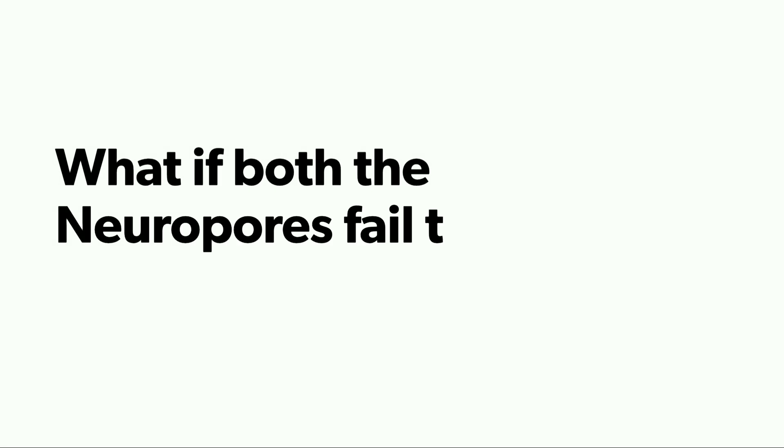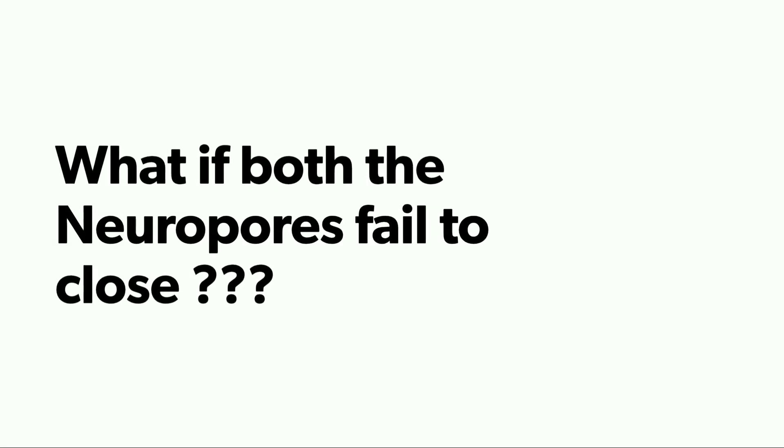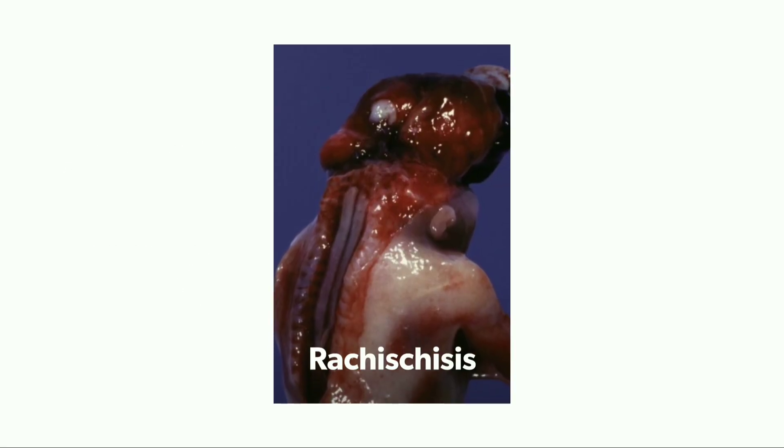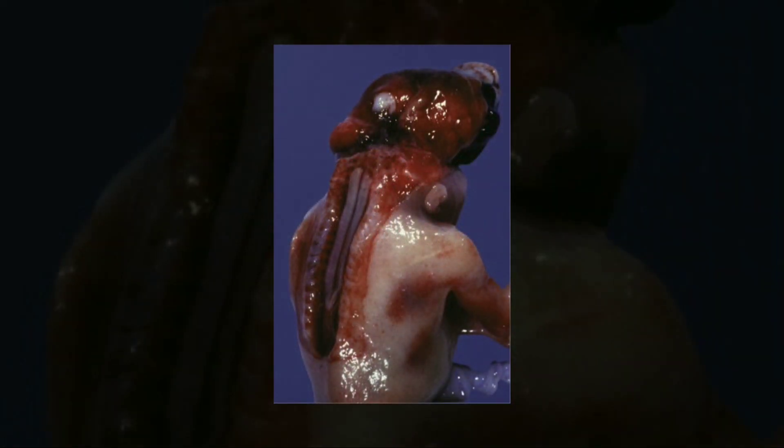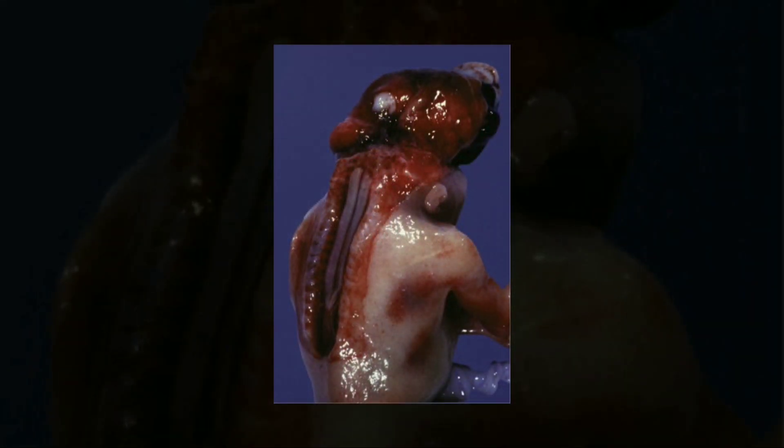But just imagine, what if both neuropores do not close? This leads to rachischisis. You can observe that the brain is not covered by cranial bones, and the light-colored spinal cord is totally exposed.